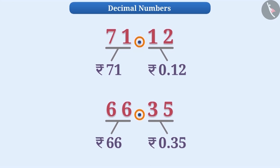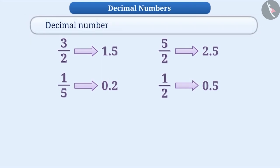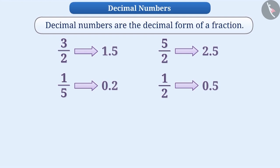Numbers in which a decimal point is used are called decimal numbers. Decimal numbers are another way to represent fractions. We can say that decimal numbers are the decimal forms of a fraction. So, in this video, let's understand the decimal numbers that are expressed till the tenths place.